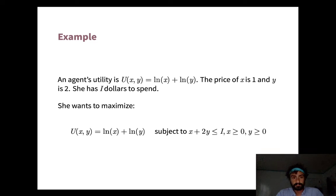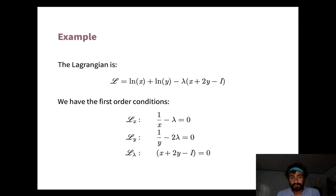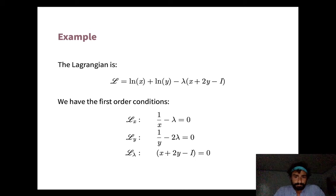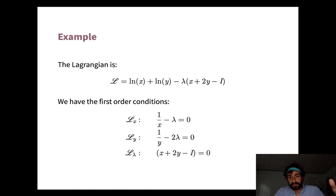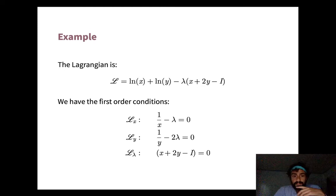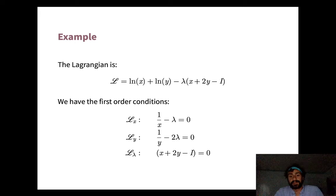Setting this up more formally, we use a Lagrangian to solve constrained optimization. The Lagrangian is: log(x) + log(y) − λ(x + 2y − I). The first-order condition with respect to x gives 1/x − λ = 0. The first-order condition with respect to y gives 1/y − 2λ = 0. The first-order condition with respect to λ returns the budget constraint holding with equality.